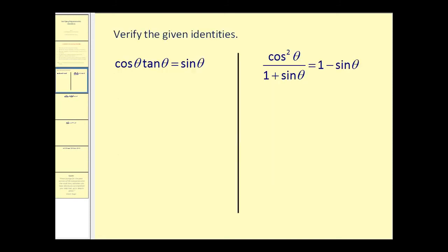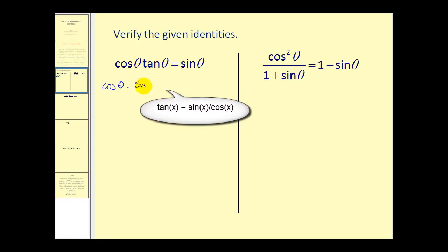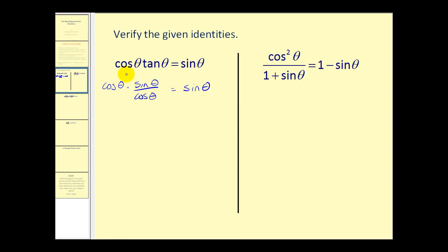Here are a couple of identities to verify. For this first one, looking at both sides, there's really only one side we can work with — there's a product we can work with on one side, and we can't do much with sine theta alone. We rewrite tangent theta as sine theta divided by cosine theta, then write cosine theta over one, and it becomes obvious how this simplifies. We have a common factor of cosine theta, and now we've verified: sine theta equals sine theta.